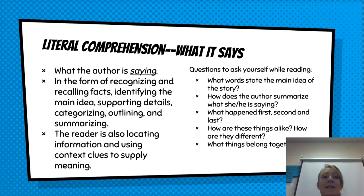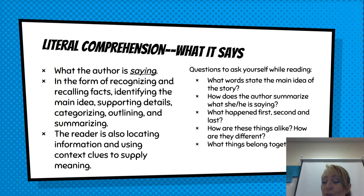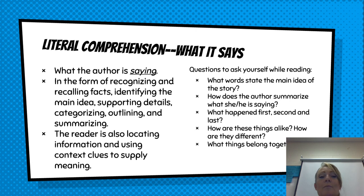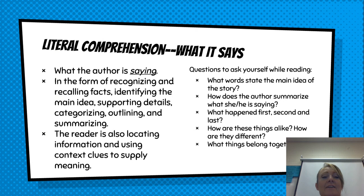Let's start with literal comprehension. Literal is simply what the text says. When we think back to those close reading strategies where we read a text three times: the first time we read a text we're looking for what it says, the second time is how it says it, and the third time is what it means. In literal comprehension we're just looking at what the author is saying — recognizing and recalling facts, identifying the main idea, supporting details, putting things into categories, outlining, summarizing. Just getting the gist of it. You locate information and use context clues to supply meaning.